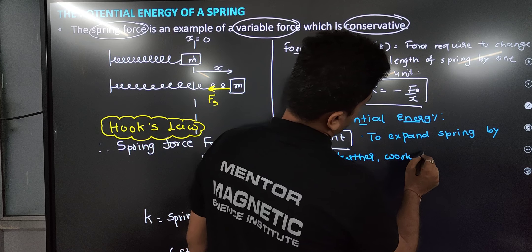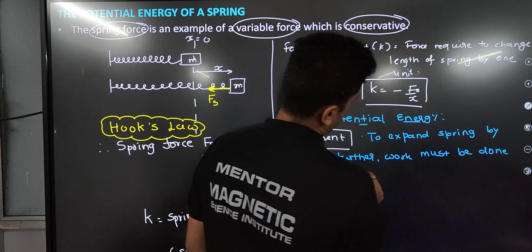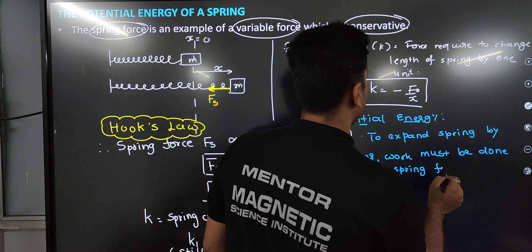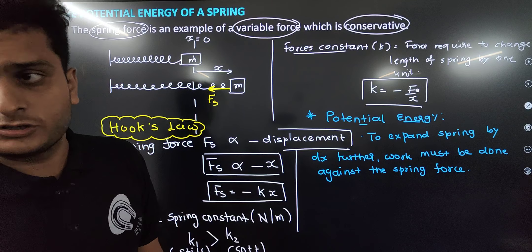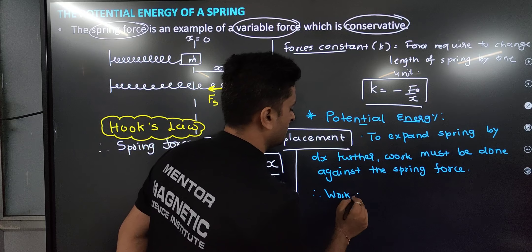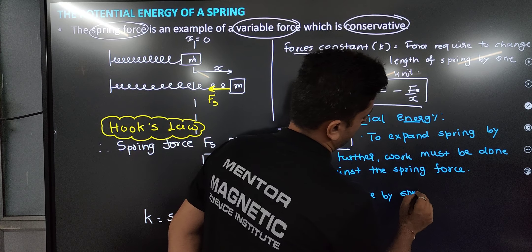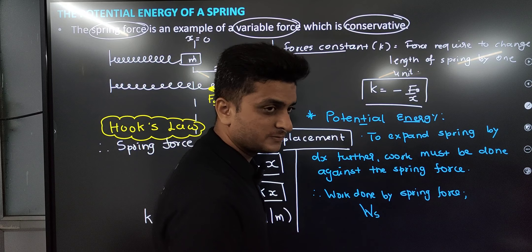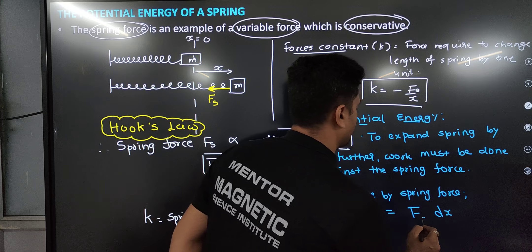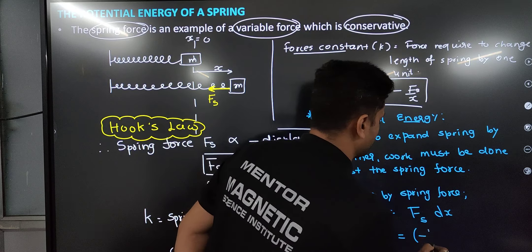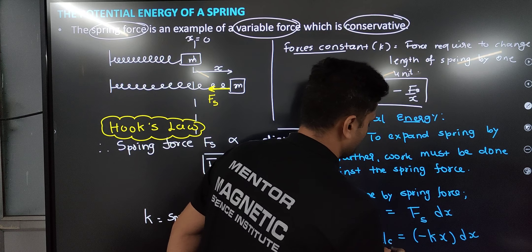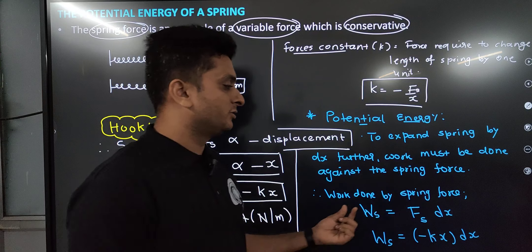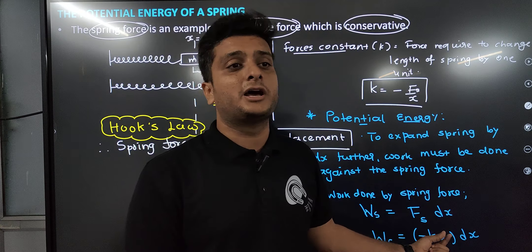To expand the spring by dx further, work must be done against the spring force. The work done by the spring force equals force into displacement: spring force is -kx, so work done = -kx · dx. This is the small work done for a displacement dx. The work done against the spring is what gets stored as potential energy.